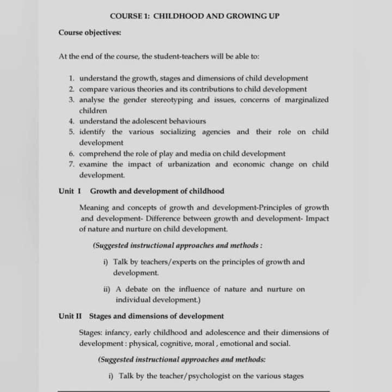Course Objective: At the end of the course, the student teacher will be able to understand the growth, stages and dimensions of child development. Second, compare various theories and their attribution to child development. Third, analyze the gender stereotypes and issues, concerns of marginalized children. Fourth, understand the adults' behavior. And fifth, identify the various socializing agencies and their role in child development. Sixth, comprehend the role of play and media on child development.